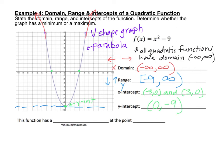Now for our new part today, we're going to decide if this function has a maximum or a minimum. The maximum is if the graph has a high point, and the minimum is if the graph has a low point. We can see that this graph has a minimum — it never goes below that value. So the function has a minimum, and that minimum is located at the ordered pair (0, negative 9).